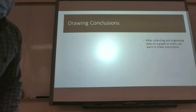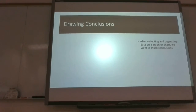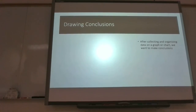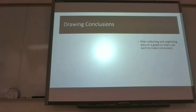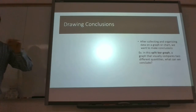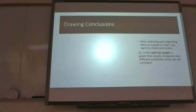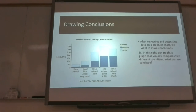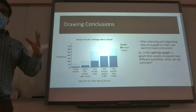So first point: how do we actually draw conclusions? After we organize and collect the data and put it in a graph or chart — we know how to do that — and we learned in chapter four about how to collect data in a reasonable way, and in the last lesson how to put it all on a graph or chart. Now we actually want to make conclusions. So let's look at this example. In this split bar graph — a split bar graph visually compares two different quantities.